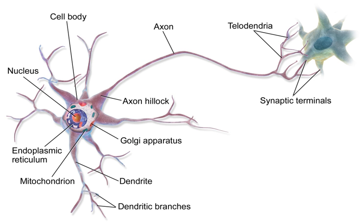Most neurons can be anatomically characterized as: unipolar (single process); bipolar (one axon and one dendrite); multipolar (one axon and two or more dendrites); Golgi type I neurons with projecting axonal processes — examples include pyramidal cells, Purkinje cells, and anterior horn cells; Golgi type II neurons whose axonal process projects locally — the best example is the granule cell; anaxonic, where the axon cannot be distinguished from the dendrites; and pseudounipolar, where one process serves as both an axon and a dendrite.